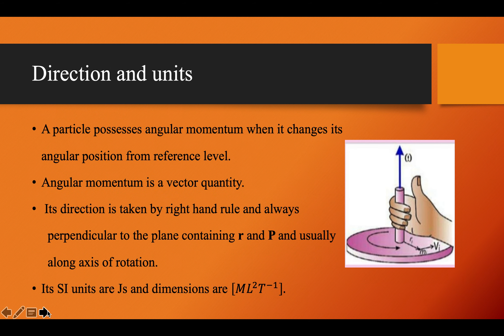The units of angular momentum are joule-seconds and its dimensions are ML²T⁻¹. As already explained, we find dimensions by converting given units to base units. Joule is converted to base units: joule equals newton-meter, and newton equals kilogram-meter per second squared. From this we get dimensions ML²T⁻¹.